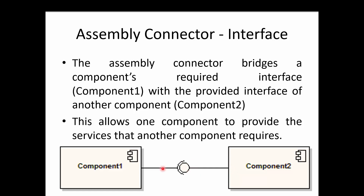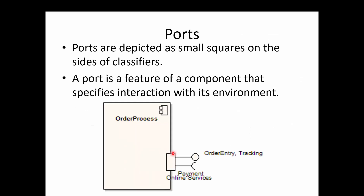When we link these two together, they can work together to accomplish a given task. In a component there is something called a port. Ports are represented using a square along the edge of the component, and these ports are used to help expose the interfaces of a component. Here we see two interfaces — one provided interface and one required interface — and this box is what we refer to as a port.